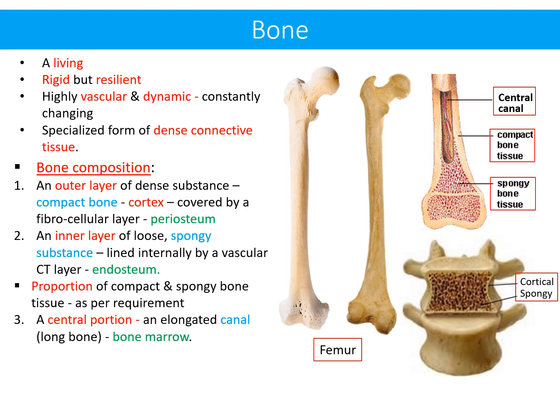Second is an inner layer of loose spongy substance, lined internally by a vascular connective tissue layer named the endosteum. The proportion of compact and spongy bone in any given bone is present as per the requirement of the area in which the bone is located. Third is a central portion present as an elongated canal in long bones, which contains bone marrow.